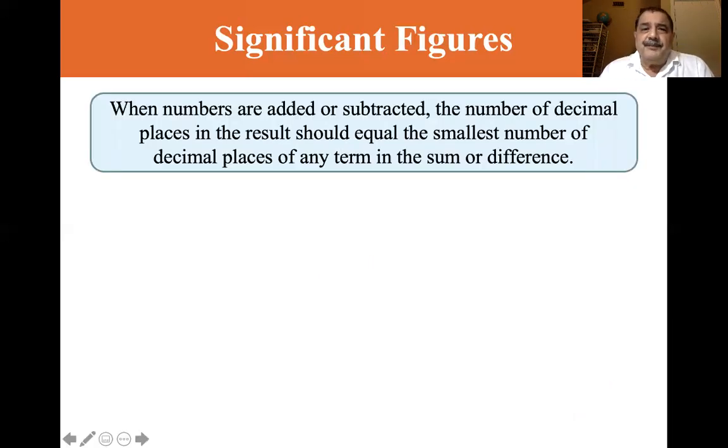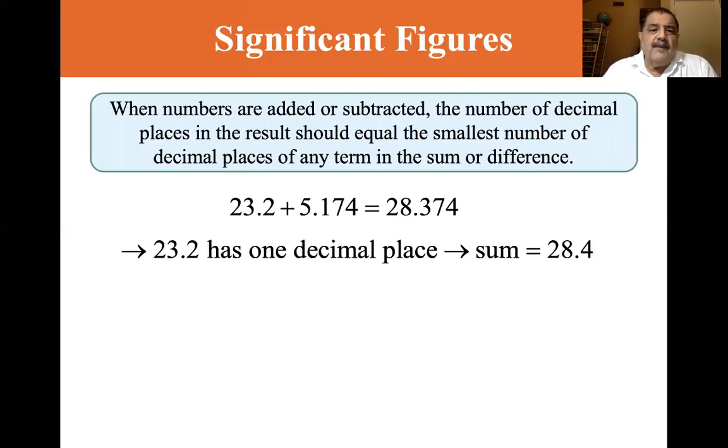Now when numbers are added or subtracted, the number of decimal places in the result should equal the smallest number of decimal places of any term in the sum or difference. So 23.2 plus 5.174 equals 28.374. 23.2 has one decimal place. So the sum is equal to 28.4. You have to drop the, you can round it, but you drop these two digits here. When numbers are added or subtracted, the number of decimal places in the result should equal the smallest number of decimal places of any term in the sum or difference. Well, this one has three decimal places. This one only has one. So you can only have one decimal place.